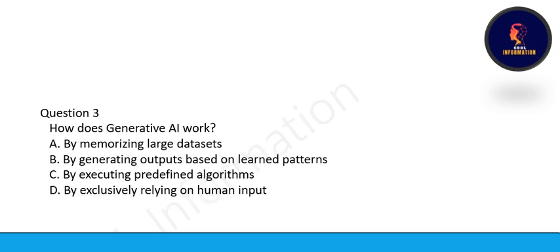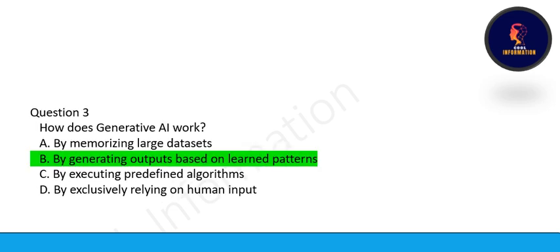Next question, how does generative AI work? Option A, by memorizing large data set, by generating outputs based on learned patterns, by executing predefined algorithm, by exclusively relying on human input. So, generative AI works by generating output based on learned patterns. Option B is correct.